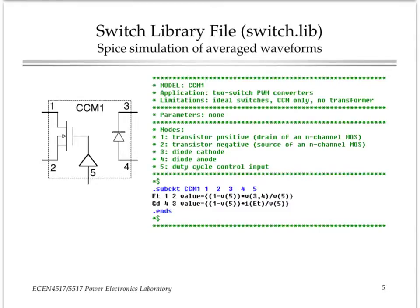For the continuous conduction mode, then proceeding from this basic result for the average switch model, we can construct a sub-circuit model in SPICE. The sub-circuit shown here is called CCM1. It's part of the sub-circuit library called switch.lib. And in this case, that switch.lib library includes the CCM1 sub-circuit model.